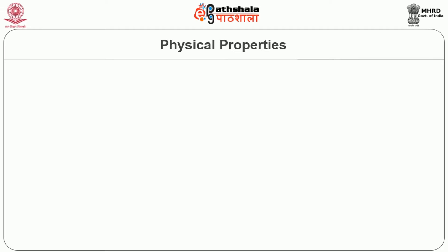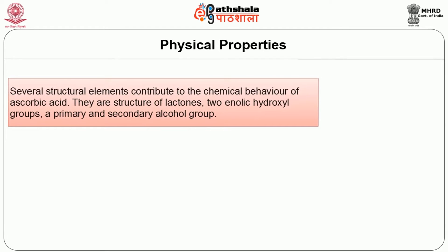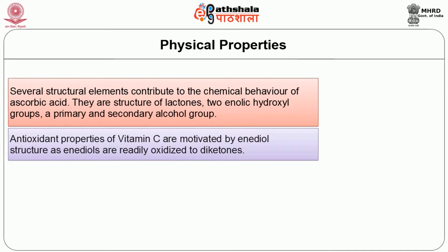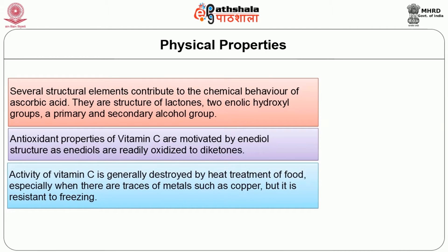We will now see the physical and chemical properties of this important vitamin. Several structural elements contribute to the chemical behavior of ascorbic acid: the structure of lactones, two enolic hydroxyl groups, a primary and secondary alcohol group. The antioxidant properties of vitamin C are motivated by the enodiol structure, as enodiols are readily oxidized to diketones. Ascorbic acid forms two intermolecular hydrogen bonds which contribute to its stability. It is stable in the enol form but is also rapidly interconverted to two unstable diketone tautomers.